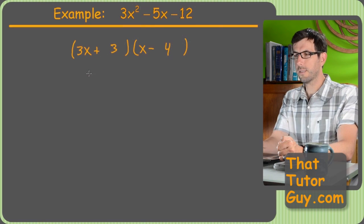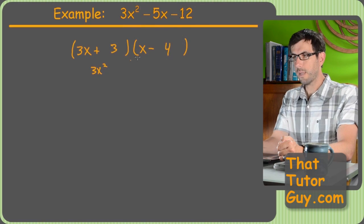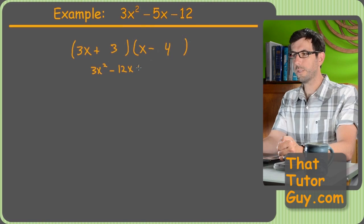We get 3x times x is 3x squared, so that works. And then 3x times negative 4 is negative 12x. And I've got a plus 3x and a negative 12, of course. So did I miss the mark? Yeah, I got a negative 9x as my middle term.